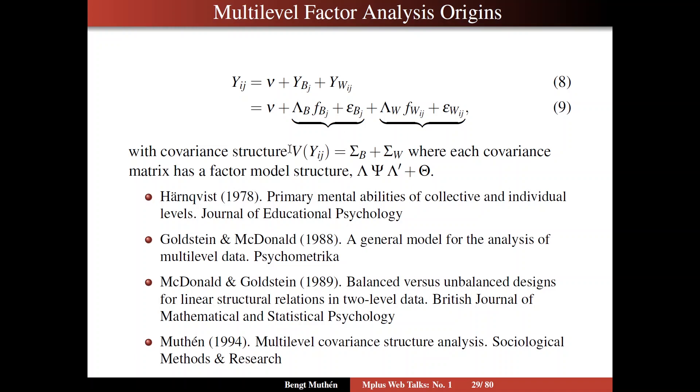So you have a covariance structure for the Y, which is sigma B plus sigma W, where each covariance matrix has a factor model structure lambda psi lambda prime plus theta, where psi is the factor covariance matrix and theta is the residual covariance matrix. You just add the subscripts B or W on these three parameter matrices.